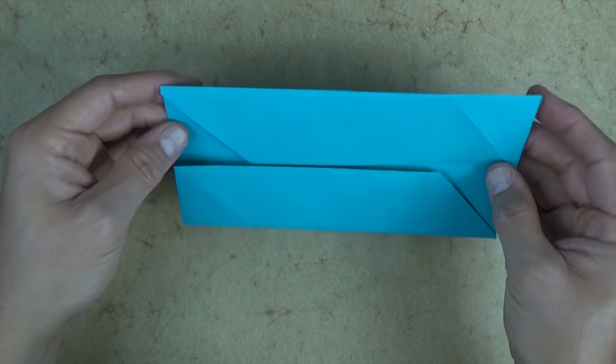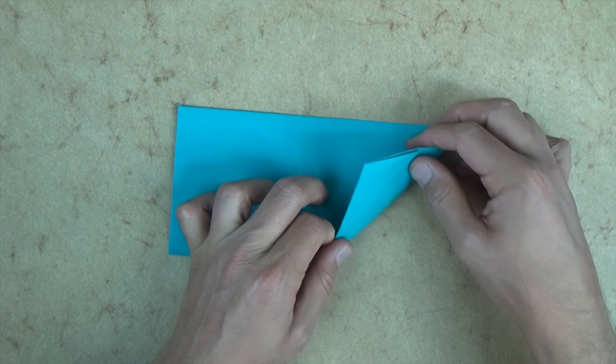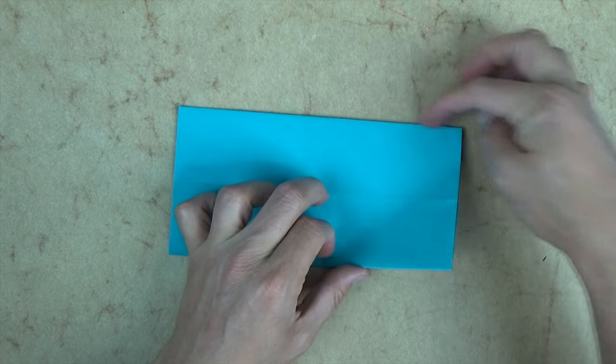Okay, now let's turn over top to bottom, and let's fold this corner up so that this edge aligns with this edge.